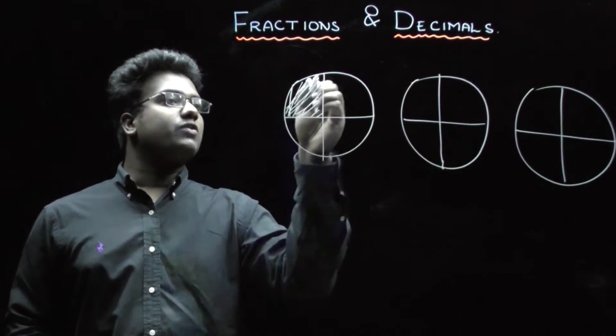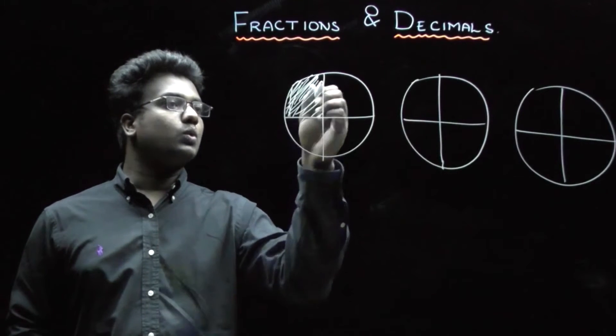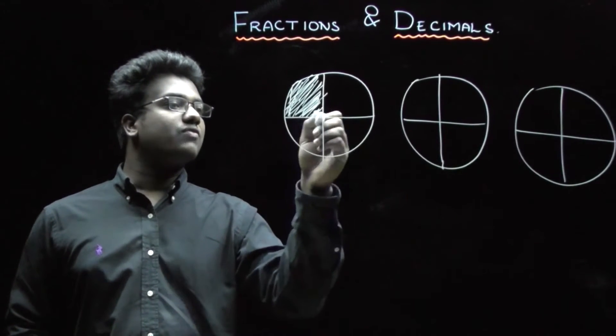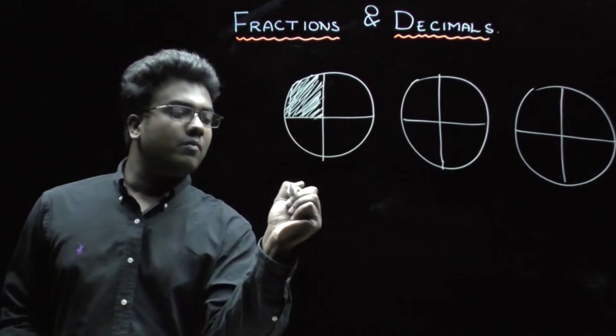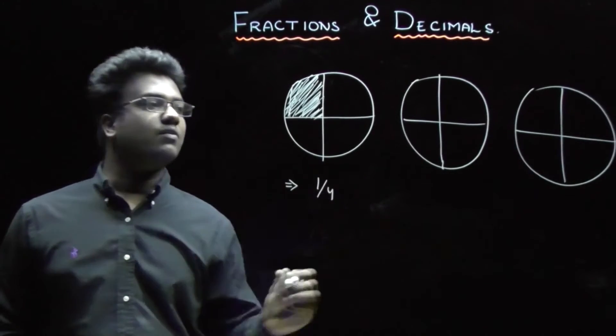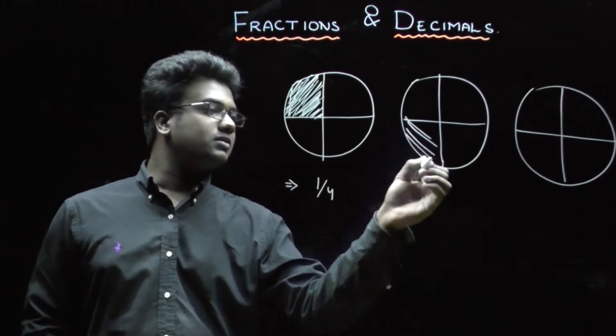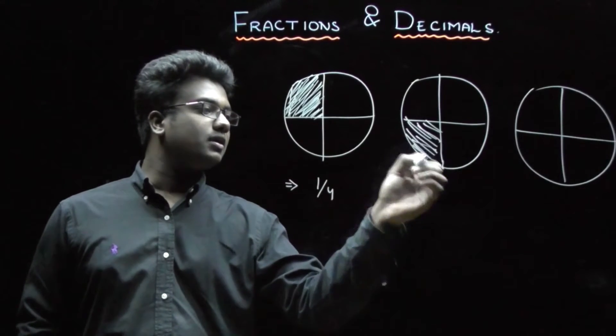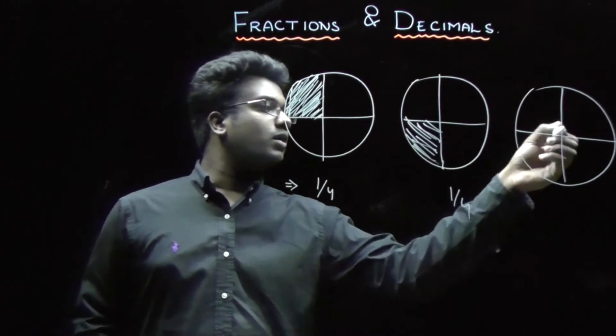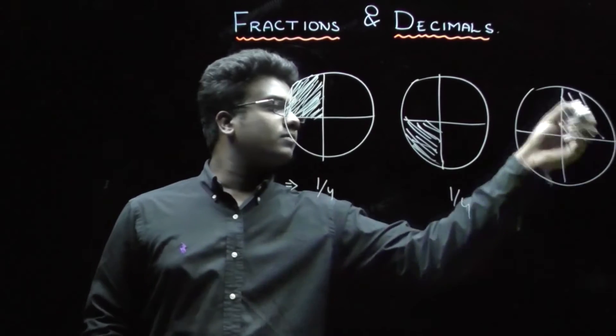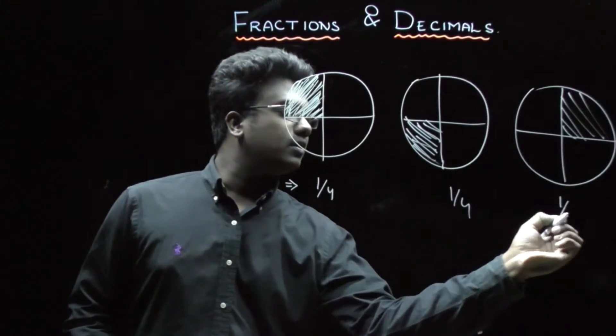And suppose if you have to calculate the fractional value in order to represent this fractional value in numerical form, what is it? It is 1 by 4, right? And what about this shaded region? Then what is the fractional part of this shaded region? It is also 1 by 4. And what about this? Yes, it is also 1 by 4.